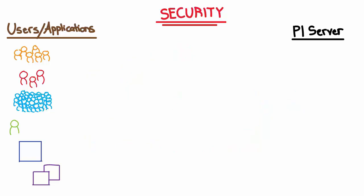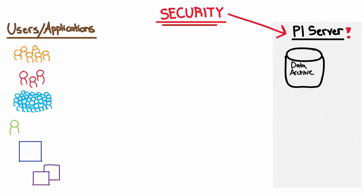Why do we even care about security? Our PI Server, specifically our data archive component, stores very important data. Good security allows us to make sure that our data is always available and that we can confirm the integrity of our data. Keep in mind, we're not only safeguarding our PI data, but potentially access to other systems that our PI Server has access to.